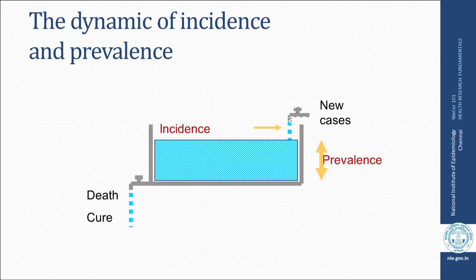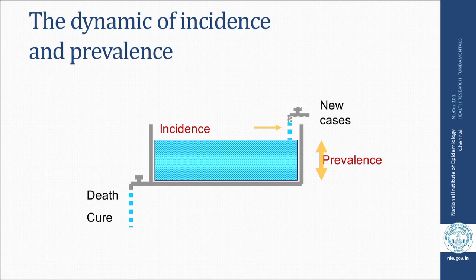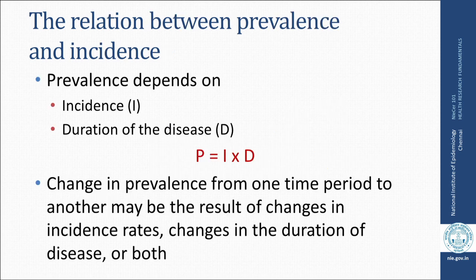The dynamic of incidence and prevalence can be depicted with a bathtub diagram. New cases flow in and cases exit because they are dying or getting cured. Incident cases are the new cases, and the cases remaining in the tub are the prevalent cases. The relationship is: Prevalence = Incidence × Duration (P = I × D). A change in prevalence from one time period to another may result from changes in incidence rates, changes in duration of disease, or both.